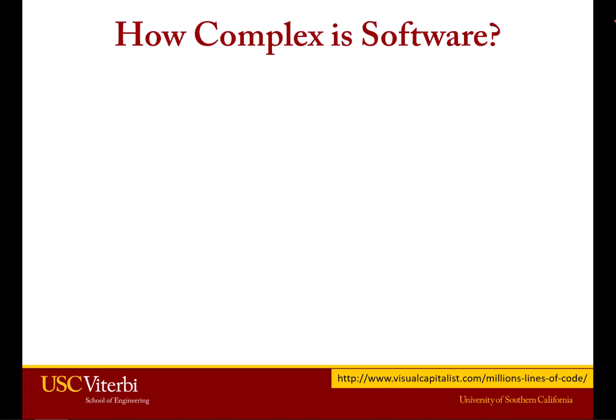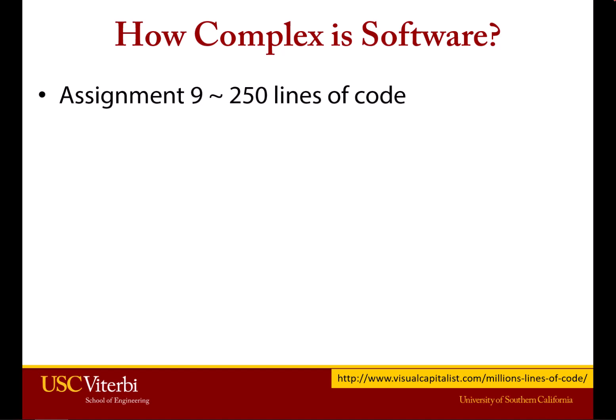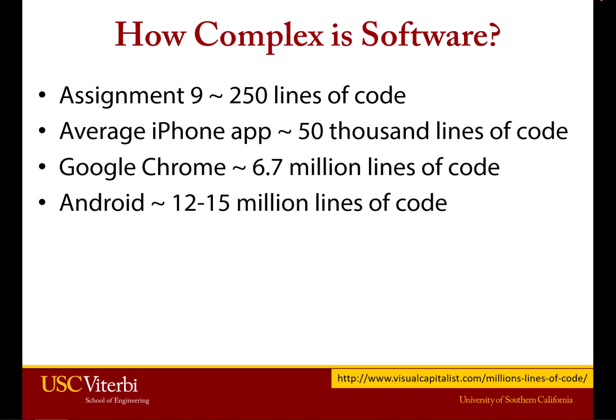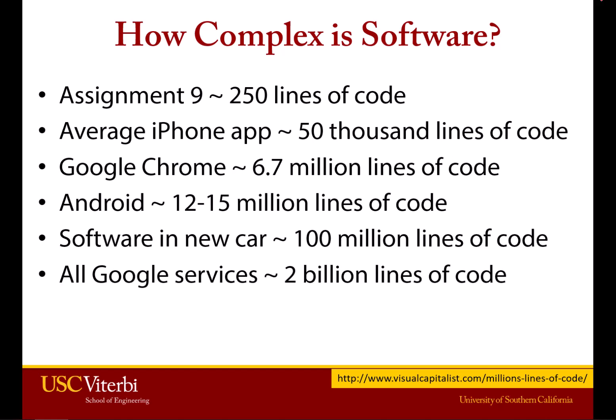Just to give you a sense of scale, why is this even necessary? Well, imagine we're looking at different pieces of software. Your homework, say assignment 9, maybe it's 250 lines of code. But when we look at software built by hundreds of people, maybe even in many different countries, the scale is huge. An iPhone app might be 50,000 lines of code. Google Chrome is 6.7 million lines of code. Looking at all Google software — Maps, YouTube, Google Drive — it might be 2 billion lines of code.